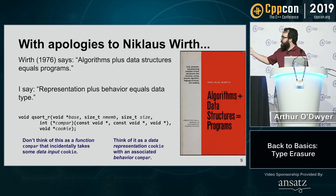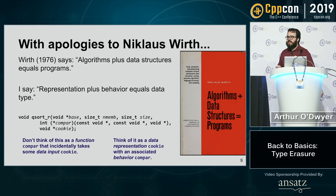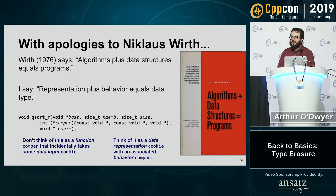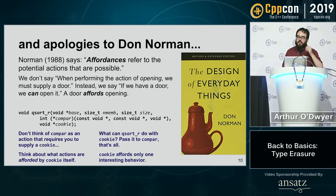Thinking about qsort_r in this way, I'm not going to think of compare as a function that incidentally takes some extra data — a cookie. I'm going to flip that around: I'm going to think of it as a data representation, the cookie, which has associated with it a behavior typified by the compare function. The function defines the behavior. The void star is pointing to some representation. Representation and behavior — if I find a way to package those up together, I have a type.